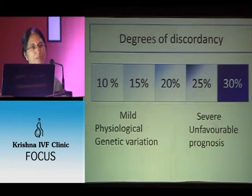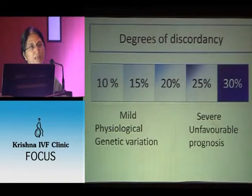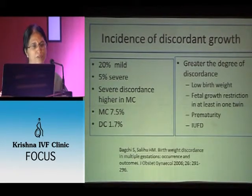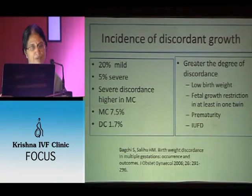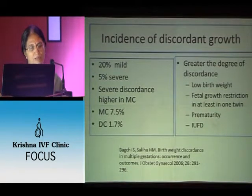Depending on the percentage of difference you call it mild or severe. If less than 20%, it is mild discordancy — the physiological genetic variation in twins. But if more than 25%, check whether the smaller baby is also growth restricted, as they have an unfavorable prognosis. The incidence of discordant growth: about 20% have mild discordancy, 5% have severe. The greater the degree of discordance, the more fetal growth restriction — these babies are delivered prematurely and are at risk of intrauterine fetal death.